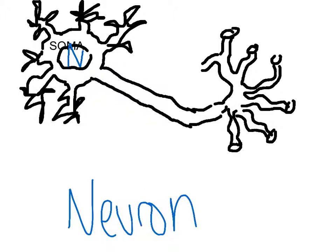These neurotransmitters are then going to, before they get to their main traveling path, which is the axon right here, they have to go through what's called an axon hillock,